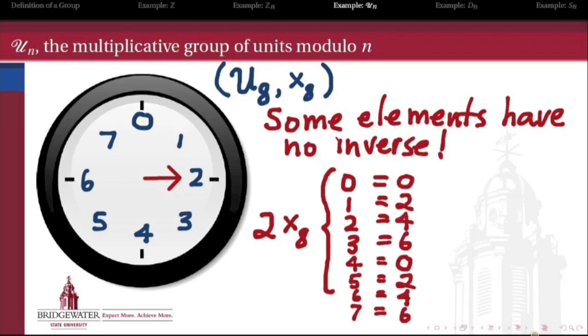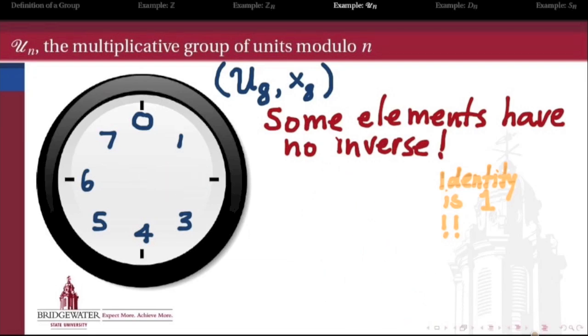For example, does 2 have a multiplicative inverse? Let's multiply 2 by every element from 0 through 7 and see what happens. 2 times 0 is 0, 2 times 1 is 2, 2 times 4 is 8, which modulo 8 is 0, 2 times 5 is 10, which modulo 8 is 2, and so on. None of these products is the identity element 1. So there's nothing I can multiply 2 by to get 1. Therefore, 2 can't belong to my group because it doesn't have a multiplicative inverse.